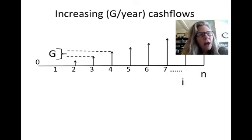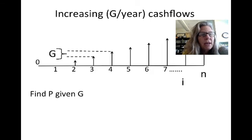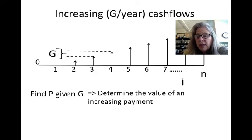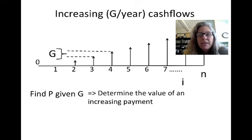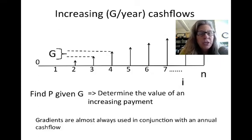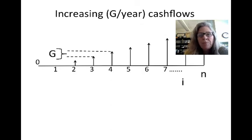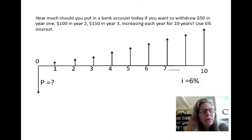Now let's look at the other shortcut: the gradient. For gradients, the most commonly used calculation is finding P given G — determining the present value of an increasing payment. Gradients are almost always used in conjunction with an annual cash flow, so problems often have an initial value that then increases by amount G each year.